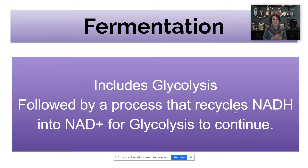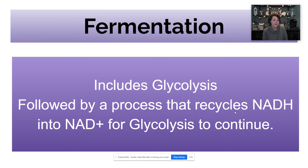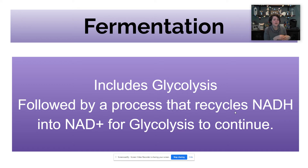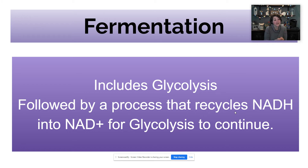In terms of what fermentation includes, it starts with glycolysis — that first step of cellular respiration — and then it's followed by a process that recycles the NADH back into NAD+ so that glycolysis can continue. Because glycolysis is creating electrons that are captured by NAD+, our electron carrier, we need to continually recycle those NAD+ so glycolysis can continue.